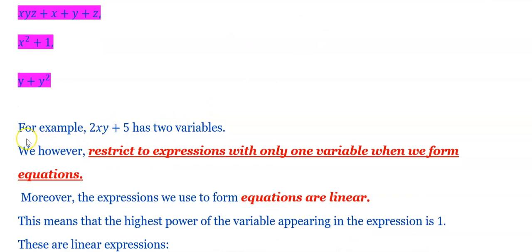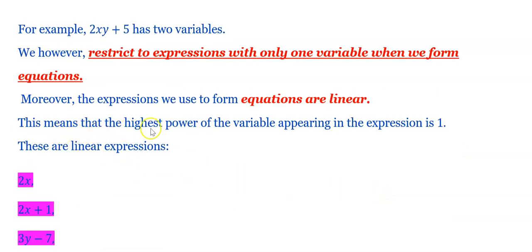Now, for example, 2xy plus 5 has two variables. However, we restrict to expressions with only one variable when we form equations. Moreover, the expressions we use to form equations are linear. If there is one variable, then it is linear. This means that the highest power of the variable appearing in the expression is one. And these are the linear expressions.